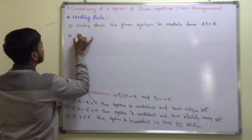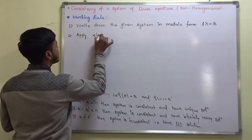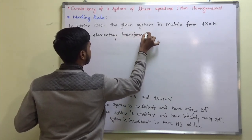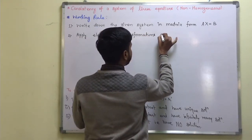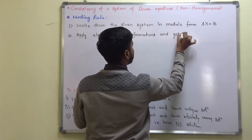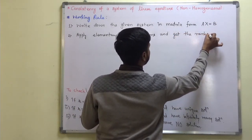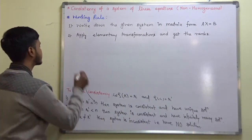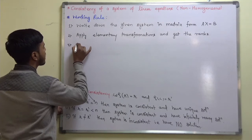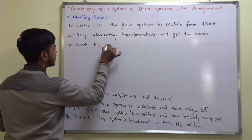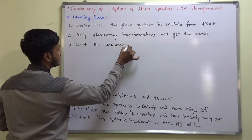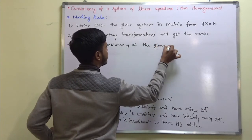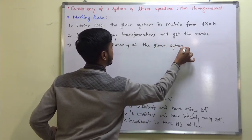Second, apply elementary transformations to get the rank of the coefficient matrix as well as the augmented matrix. The third step is to check the consistency of the given system.